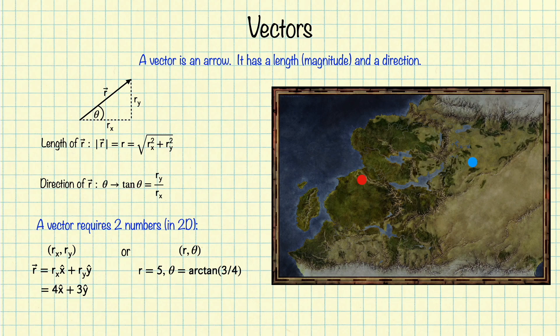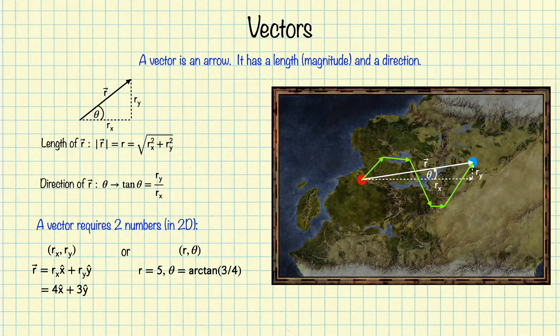Let's say I'm standing at this red dot and someone is going to give me directions to get to this blue dot. One set of directions they might give me is to move due east some distance rx and then turn and move due north some distance ry — that will get me to the blue dot. Another set of directions is to face due east and rotate by some angle theta towards the north, then walk in a straight line to the blue dot. Either set of directions is equivalent to this vector r. Someone might also send me on a meandering path that winds about until it eventually reaches the blue dot — that result is also equivalent to the vector r. This green path is actually a sequence of separate vectors one after the other, so we have just discovered that we can add vectors.